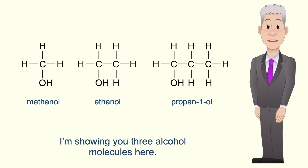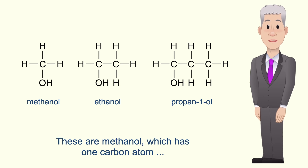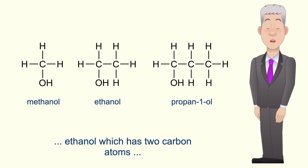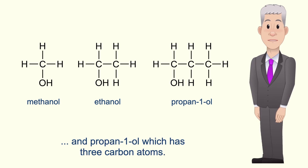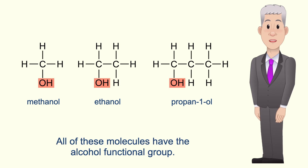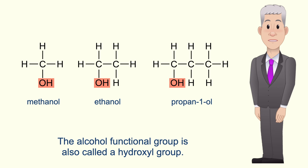I'm showing you three alcohol molecules here. These are methanol which has one carbon atom, ethanol which has two carbon atoms, and propan-1-ol which has three carbon atoms. Now all of these molecules have the alcohol functional group, and the alcohol functional group is also called a hydroxyl group.